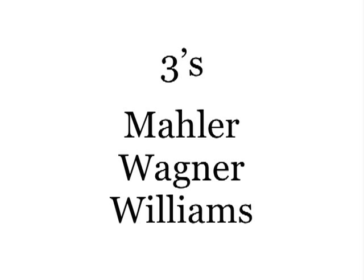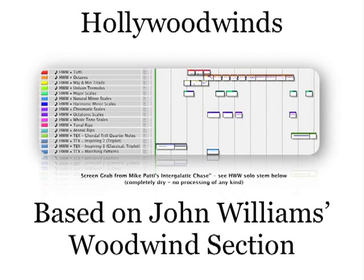The threes means a three-person section per woodwind family, which has mostly been used by Wagner, Mahler, and film composer John Williams. Per Mike Berry at Cinesamples, Hollywood Winds is based on John Williams' woodwind section. So if you're writing for a big wind section, strongly consider adding Hollywood Winds to your template.